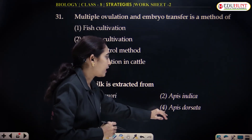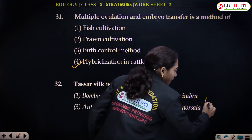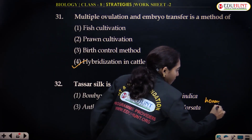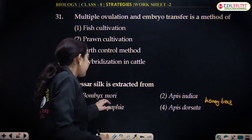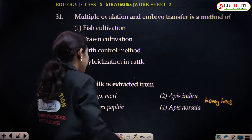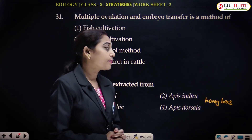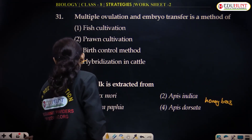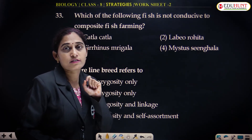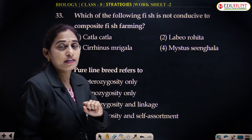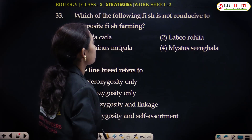Apis indica and Apis dorsata are honey bees. Bombyx mori produces mulberry silk. Tussle silk is obtained from Antheraea paphia — Antheraea paphia is the silkworm from which tussle silk is obtained.